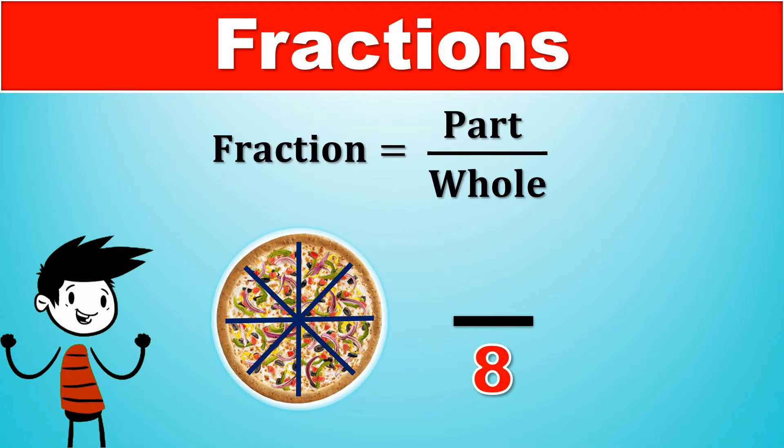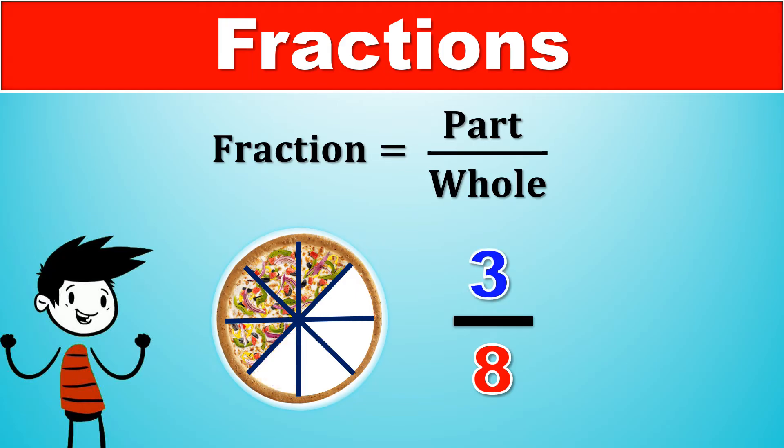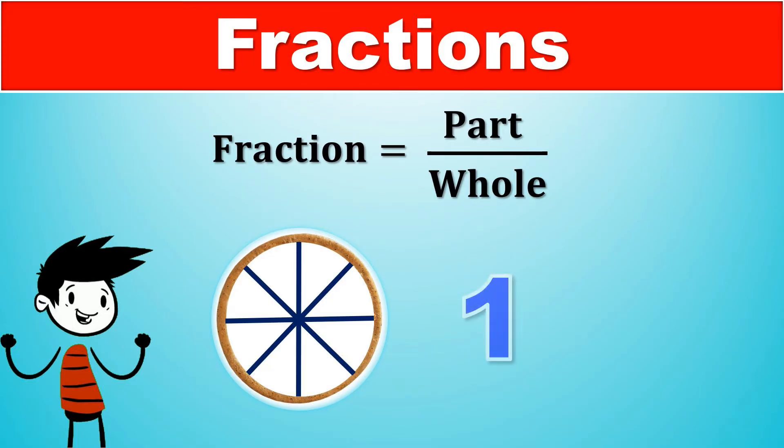Now let's begin taking slices from this pizza and count up as we go. Starting with one eighth of the pizza, two eighths, three eighths, four eighths, five eighths, six eighths, seven eighths, and finally eight eighths of the pizza, which is actually just one because any number divided by itself always equals one.